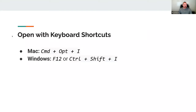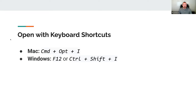You can also use shortcuts to open up the Chrome developer tools — typically how I do it since I like to keep my hands on the keyboard. On a Mac, you can hit Command, Option, and then I. All the shortcuts I'll mention are Mac shortcuts, but you can substitute Command with Control for Windows. On Windows, Control+Shift+I is the long form, but it's way easier to just hit F12.